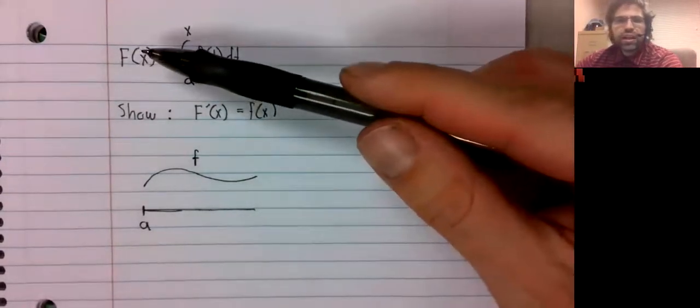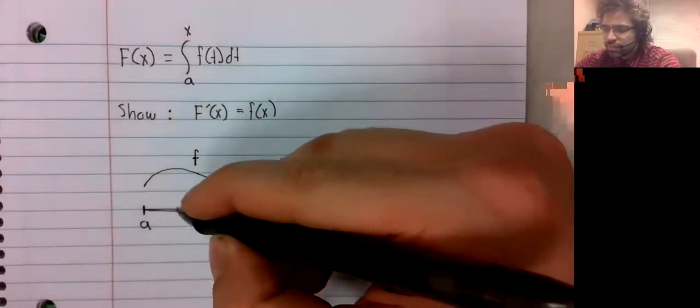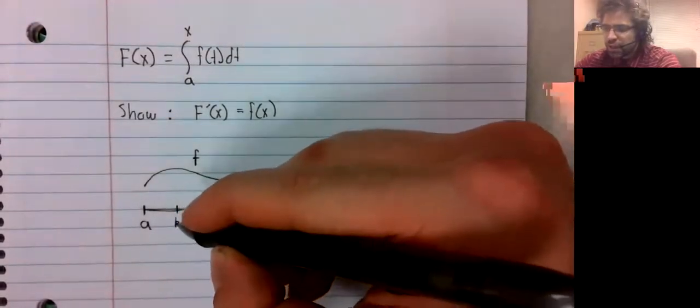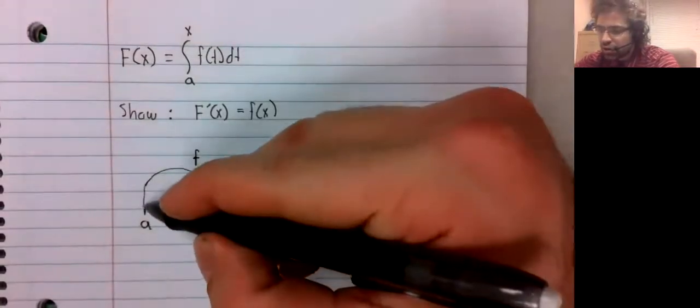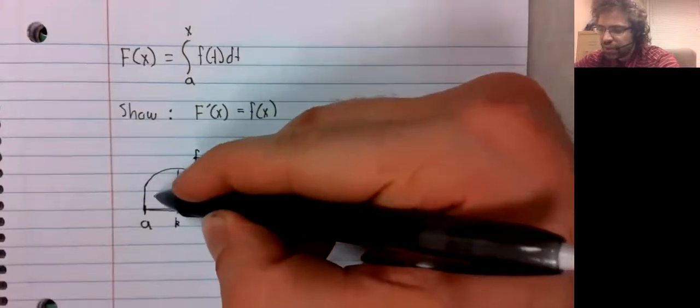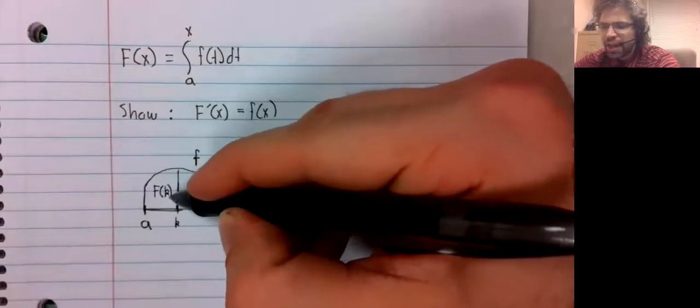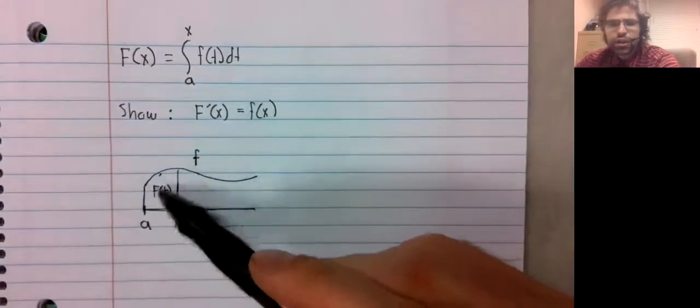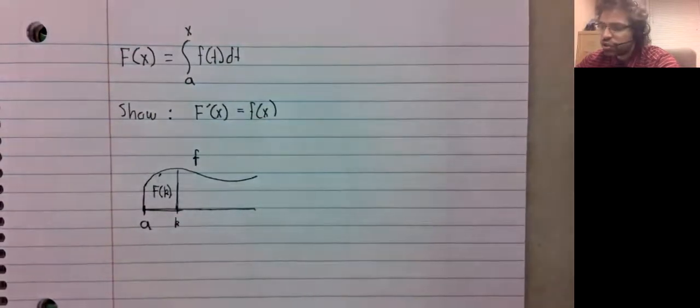Remember that this is an area function. If we have some number K there, then capital F of K is the area under the curve in this region.